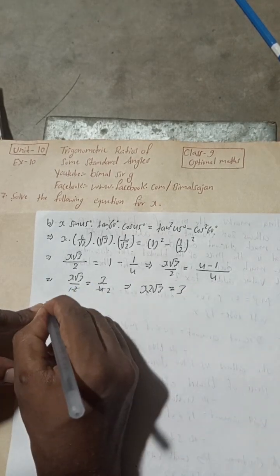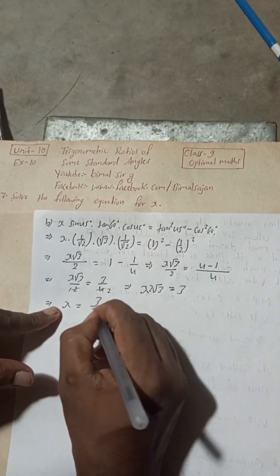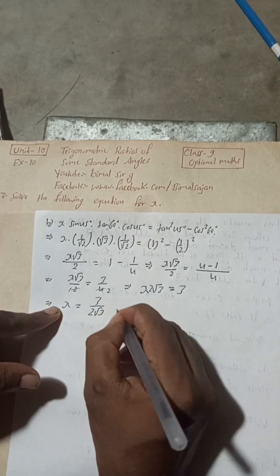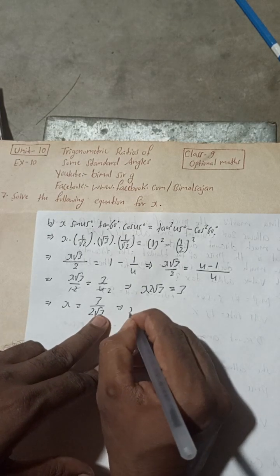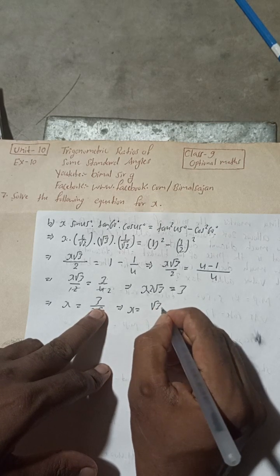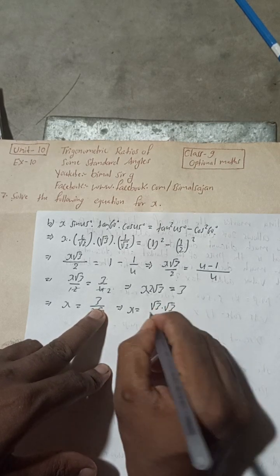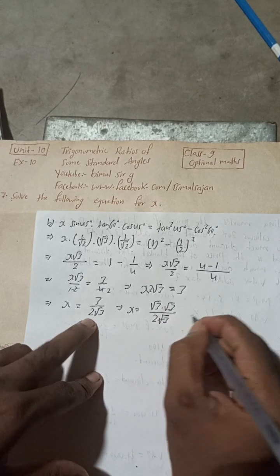So this now implies here x, this x is equal to 3 by 2 root 3. Now this implies x is equal to root 3 can be written as root 3 into root 3 divided by 2 root 3, so 3 3 cancel, there is remaining.